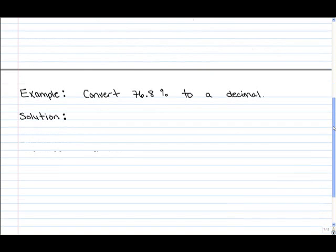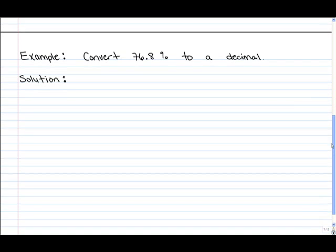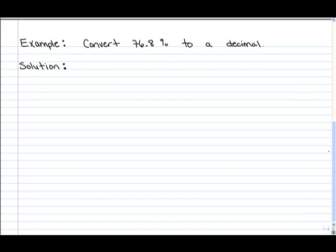So let's take a look at this same percentage. Convert 76.8% to a decimal. So as stated, to convert 76.8% we could take the decimal point and move it to the left two spots. And then just drop the percent sign. So 76.8% is equal to 0.768.